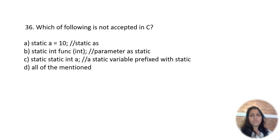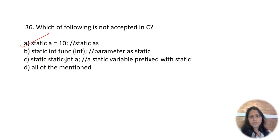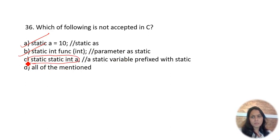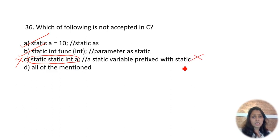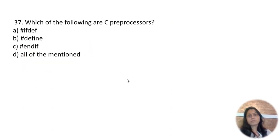Which of the following is not accepted in C? 'static a = 10' is accepted. 'static int function(static int a)' — a static parameter is also accepted. But 'static static int a' — prefixing static twice is an illegal statement and not accepted in C.